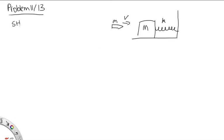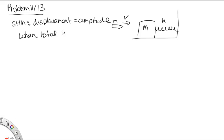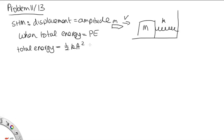When undergoing simple harmonic motion, the displacement will equal the amplitude when the total energy is all equal to the potential energy — that is, when there's no kinetic energy, when all the energy is stored in the spring. So if we know the total energy, it equals one half k A squared, and this will allow us to find A. So what we need to do is find the total energy of this system.